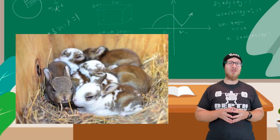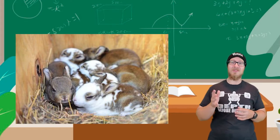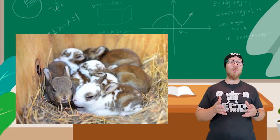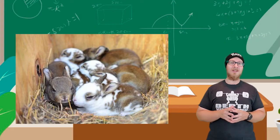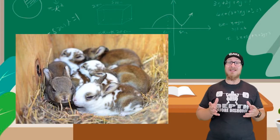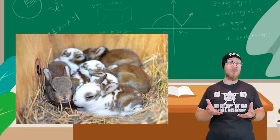Rabbits reach reproductive maturity within just five months of age and have about 12 babies per litter. Bunnies become independent of their parents in only three weeks.